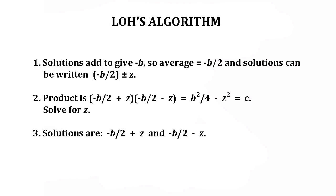The big advantage of Loh's method is that you don't have to remember the formula — minus b plus or minus the square root of b squared minus 4ac all over 2a. Instead, all you need to remember is the method or the algorithm, and this is in three steps. One: the solutions must add to give minus b, so their average is minus b over 2, and they can be written as minus b over 2 plus or minus z. Two: write down the product — minus b over 2 plus z, times minus b over 2 minus z, equals b squared over 4 minus z squared, which equals c — and solve for z. Three: the solutions are minus b over 2 plus z and minus b over 2 minus z.